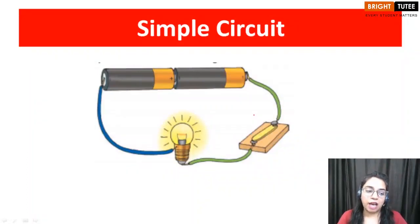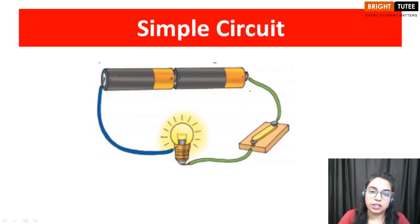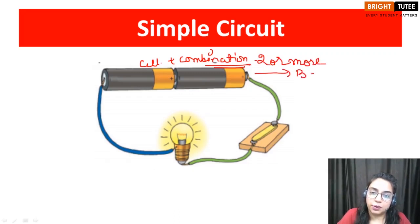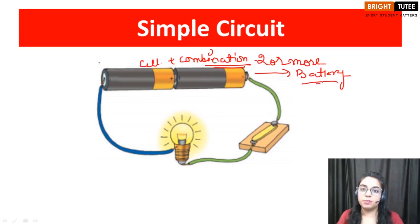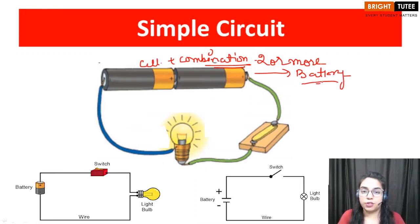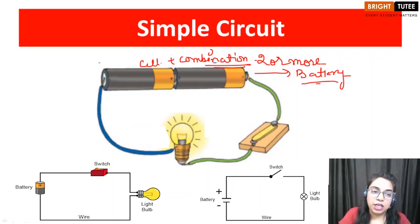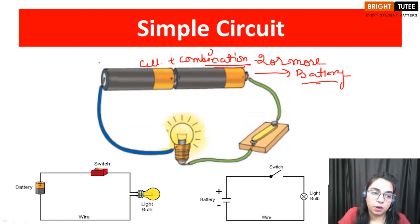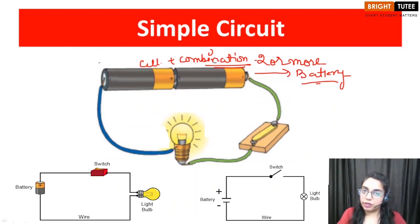This is a simple circuit that we have been studying. Even in our previous sessions, we discussed that we need a cell or a combination of cells. When two or more cells are combined together, we call it a battery. A circuit is a complete path through which electric current can flow. Current starts from the positive terminal of the cell, flows throughout the path, and reaches the negative terminal — then we call it a complete circuit.